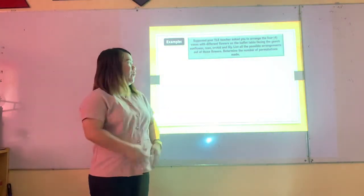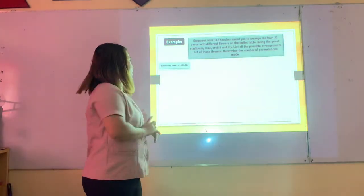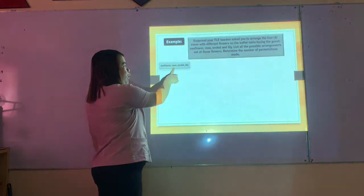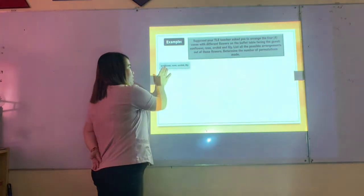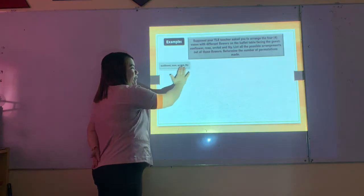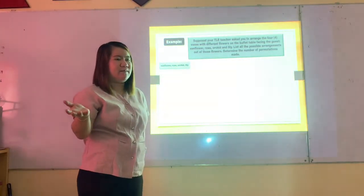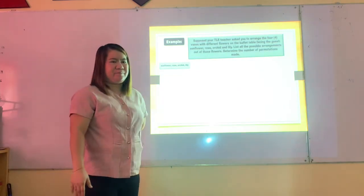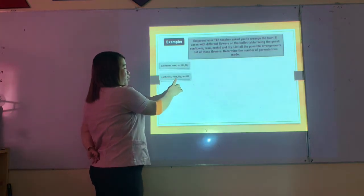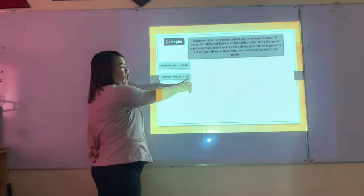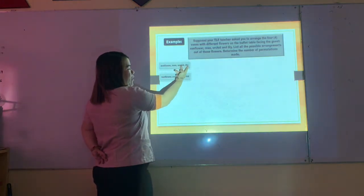First arrangement: sunflower, rose, orchid, baby's breath. Second arrangement: sunflower, rose, baby's breath, orchid — orchid and baby's breath switch position.